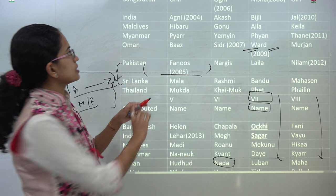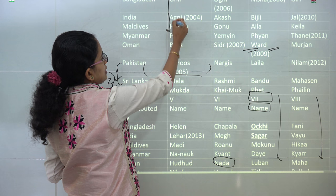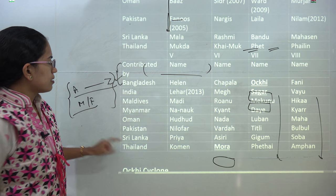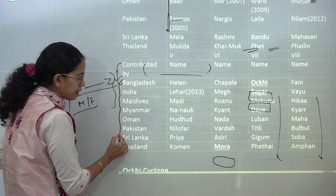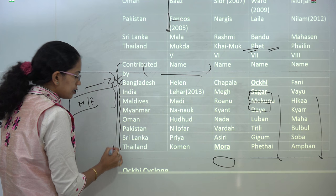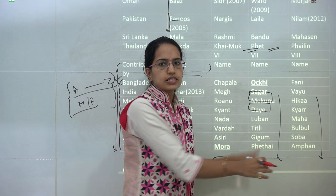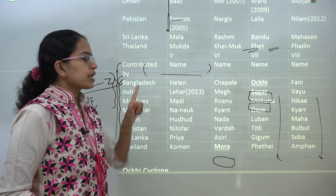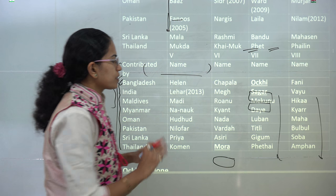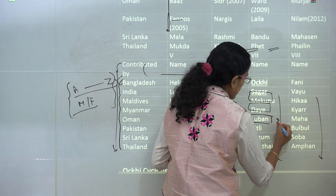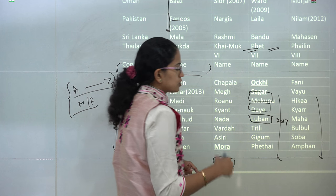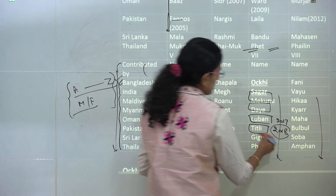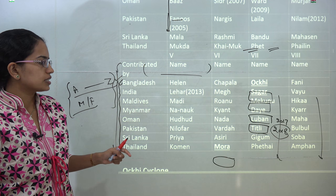The naming started with Onil from Bangladesh, then Agni from India, and so on. The sequence follows the alphabetical order of the country names: Bangladesh, India, Maldives, Myanmar, Oman, Pakistan, Sri Lanka, and Thailand. If, for example, the cyclones of 2017 end at Luban, then the next cyclone in 2018 would resume from Titli — continuing from where the list was left off.